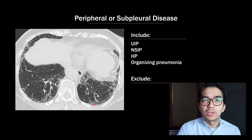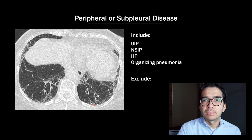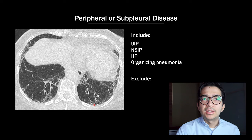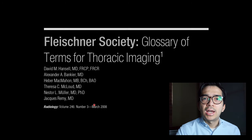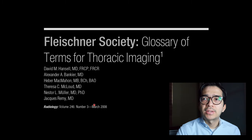For example, if you had a patient with peripheral predominant ground glass opacity or consolidation, you couldn't really exclude NSIP or organizing pneumonia. Once you've figured out the distribution, the next step is to describe the findings using the proper terms. I highly recommend reading the glossary of terms for thoracic imaging put out by the Fleischner Society.